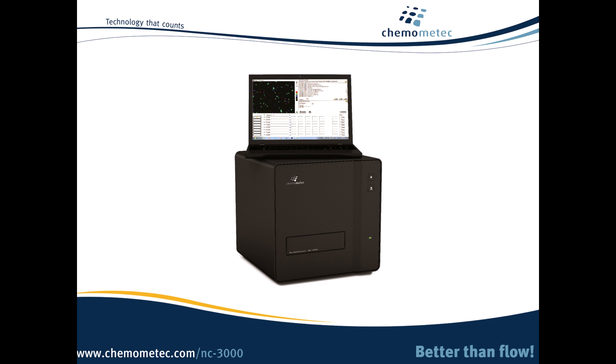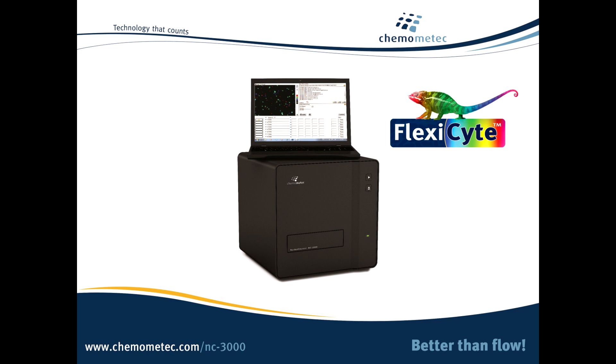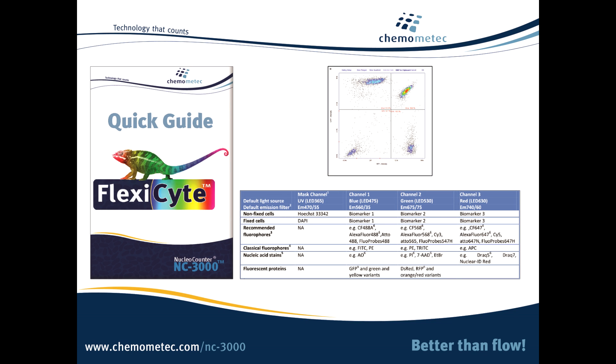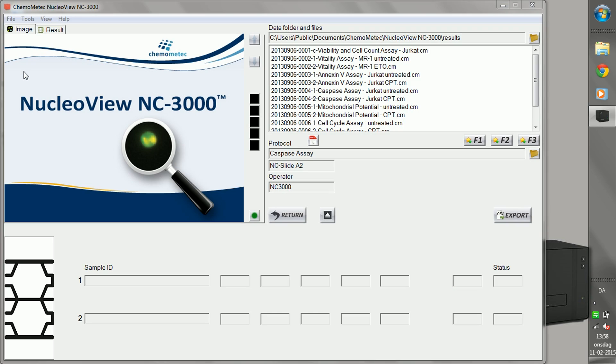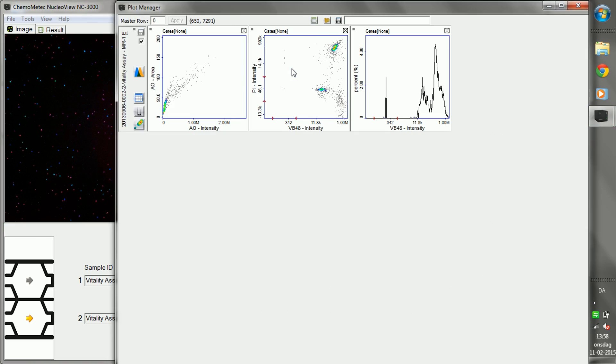If that's not enough, there's FlexiCyte. FlexiCyte is a flexible cytometry platform that lets you build your own customised assay from the ground up using the cell markers and fluorophores you want. Install the software on as many computers as you like and do your analysis from anywhere.